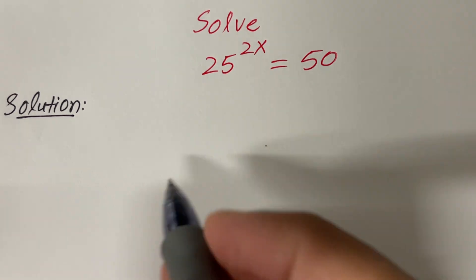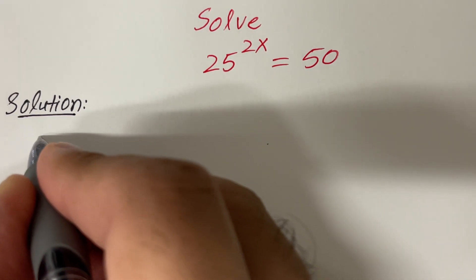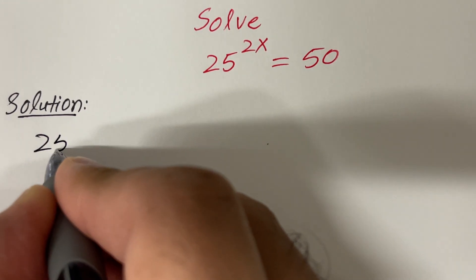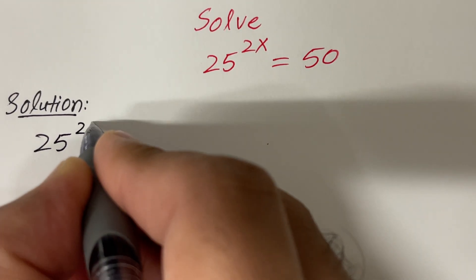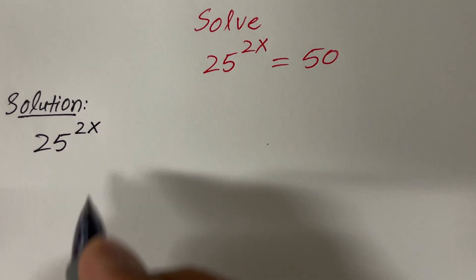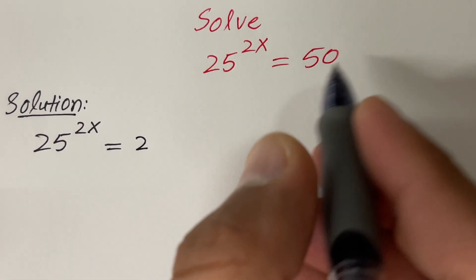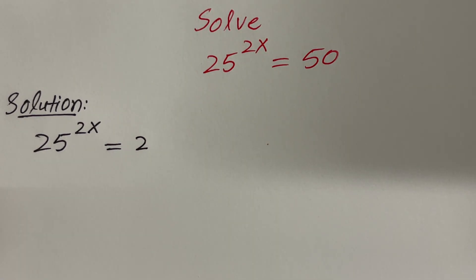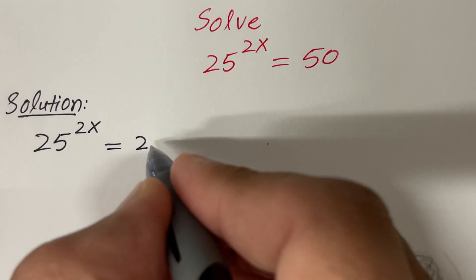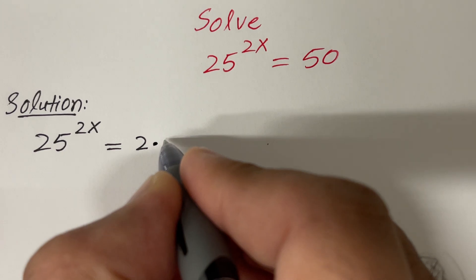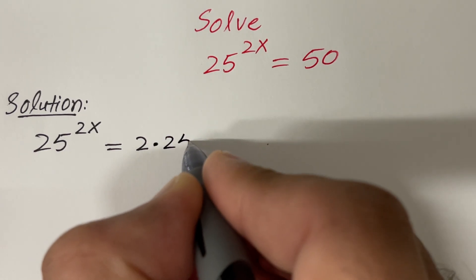The given equation is 25 raised to the power 2x is equal to 50. And I can write 50 as 2 times 25.